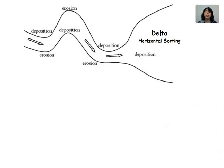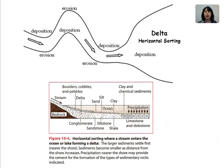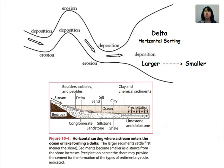Deposition takes place on the inside of meanders and on the outside, erosion occurs. We should also realize that deposition takes place at the delta. At the delta, when velocity slows down significantly, we see horizontal sorting take place. Larger sediments are deposited right by the mouth of the stream, and as the stream water moves farther out into still water, particles get smaller and smaller — going from boulders, cobbles, and pebbles all the way to clay and chemical sediments such as dissolved ions.